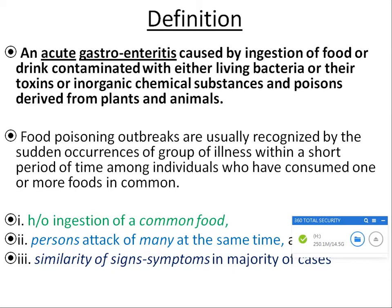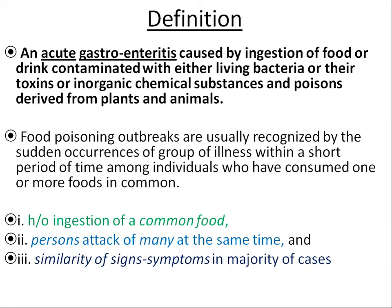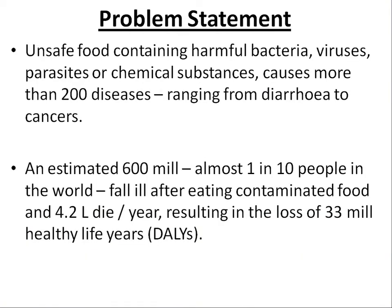Food poisoning outbreaks are recognized by sudden occurrence of a group of illness within a short period of time, meaning a very short incubation period, and one or more foods are consumed by a common group of people. To summarize: there's a history of ingested common food, persons attacked many together — if you and your friends partake in a meal, majority of you will fall ill — and there is similarity in signs and symptoms in majority of cases. These are the three important things in the definition.